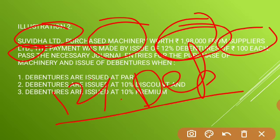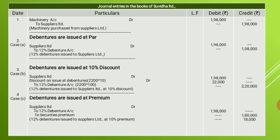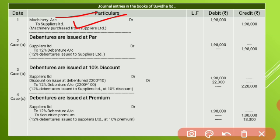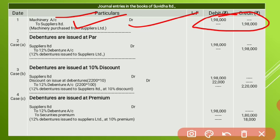Now we will go with the sum. The first journal entry will be related to the purchase of machinery. They have purchased machinery, so the entry is: Machinery Account debited to Suppliers Limited. The amount they are supposed to pay is 1,98,000 rupees. This is for the purchase of machinery — being machinery purchased from Suppliers Limited on credit. The first journal entry is common for all three conditions.